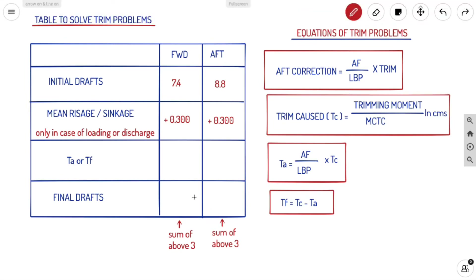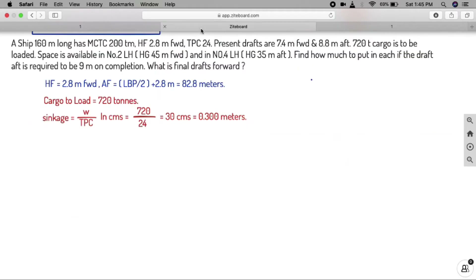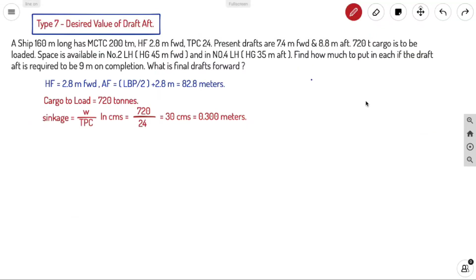In the question, the final aft draft is required to be 9 meters. So the sum of initial aft draft, sinkage, and trim aft must equal 9 meters — that's the main concept of this type of problem.